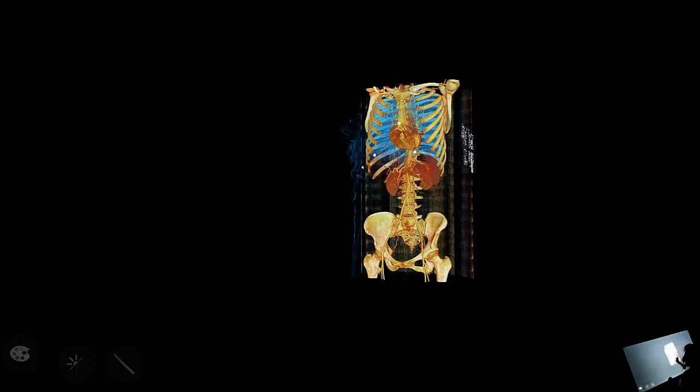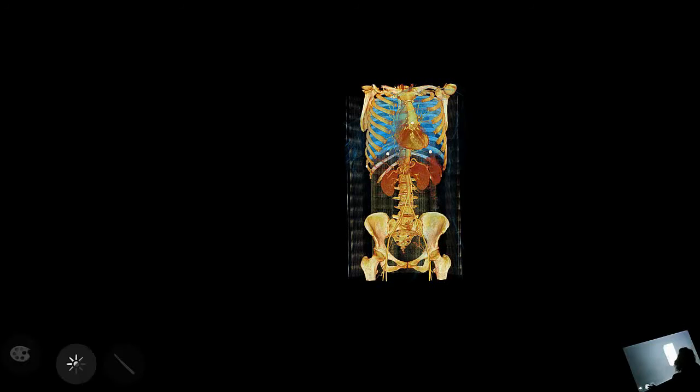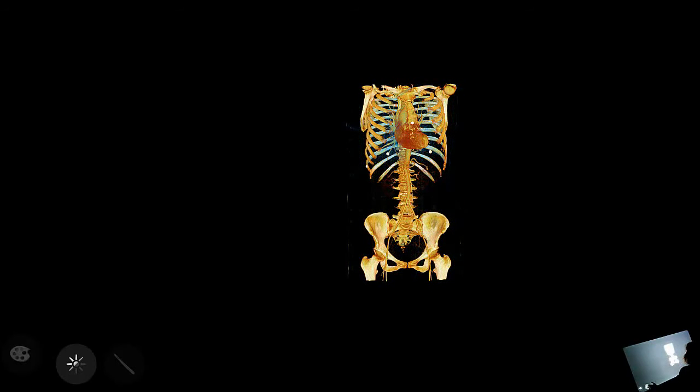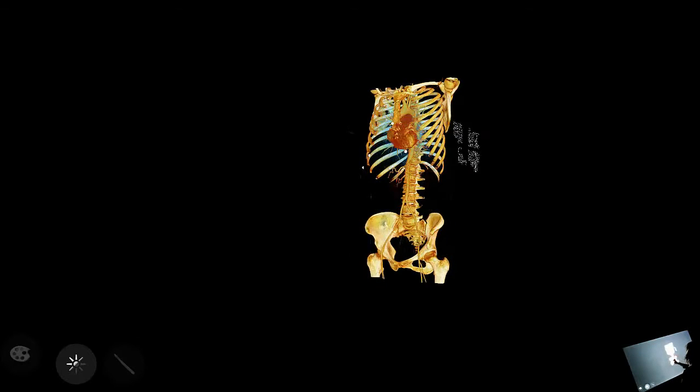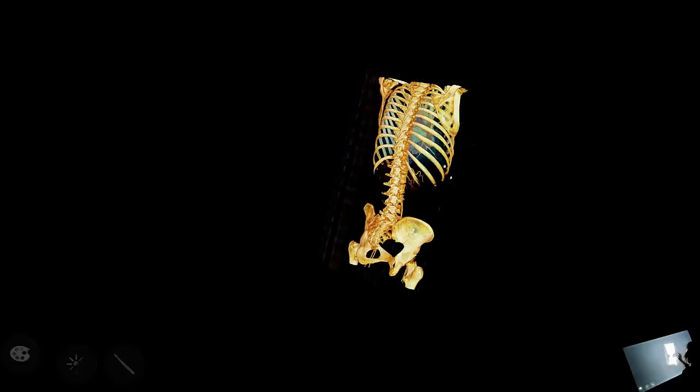And if I want to do some additional editing, I can change the windowing brightness of this model here with my brightness puck. I can get rid of those kidneys there so I can fully visualize the spine 360.